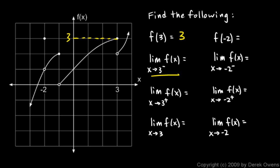The limit as x approaches 3 from the left: as we approach 3 from the left, we're moving along this section of the curve, getting closer and closer to a y-value of 3. So the left-side limit is 3. The limit as x approaches 3 from the right: as x values gradually get closer to 3 from the right, we're moving along this section of the curve toward a point at a y-value of 2. So the right-side limit is 2.